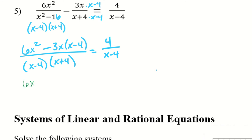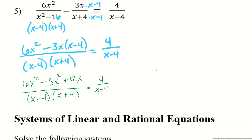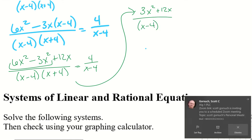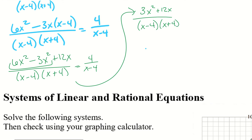So now I have 6x squared minus 3x squared plus 12x all over x minus 4 and x plus 4, equal to 4 over x minus 4. I notice I have like terms, so combining gives me 3x squared plus 12x all over x minus 4 times x plus 4 equals 4 over x minus 4. I can factor the numerator.